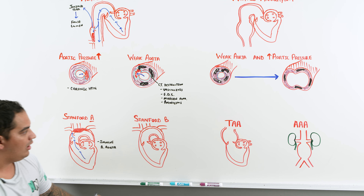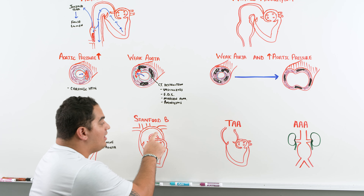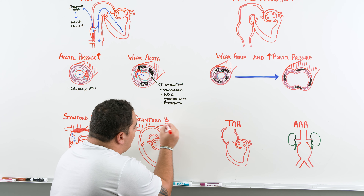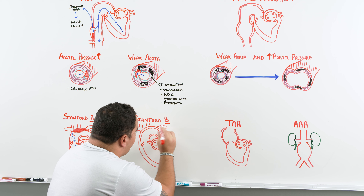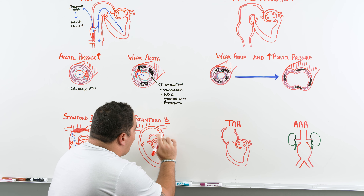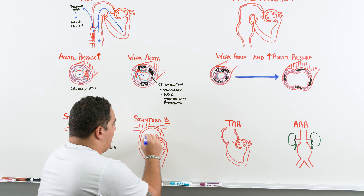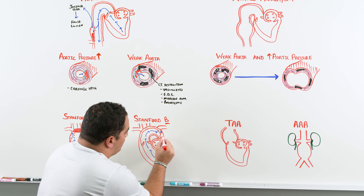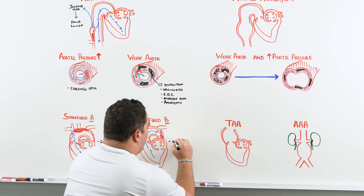Stanford Type B dissections do not involve the ascending aorta. They must begin beyond the left subclavian artery. So the intimal tear starts somewhere after the left subclavian, blood rips through and creates the false lumen at that point — past the aortic arch, in the descending aorta.